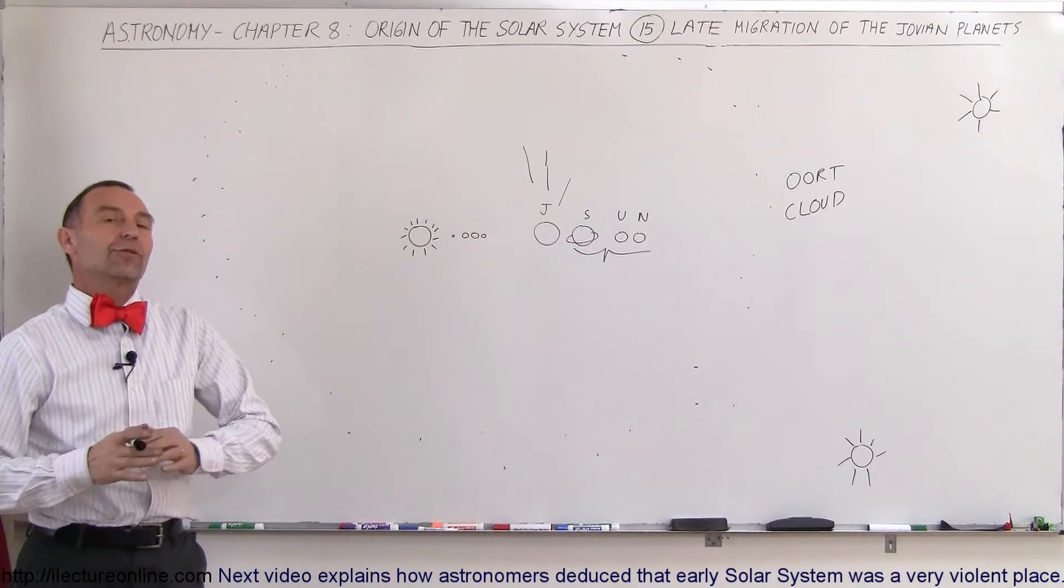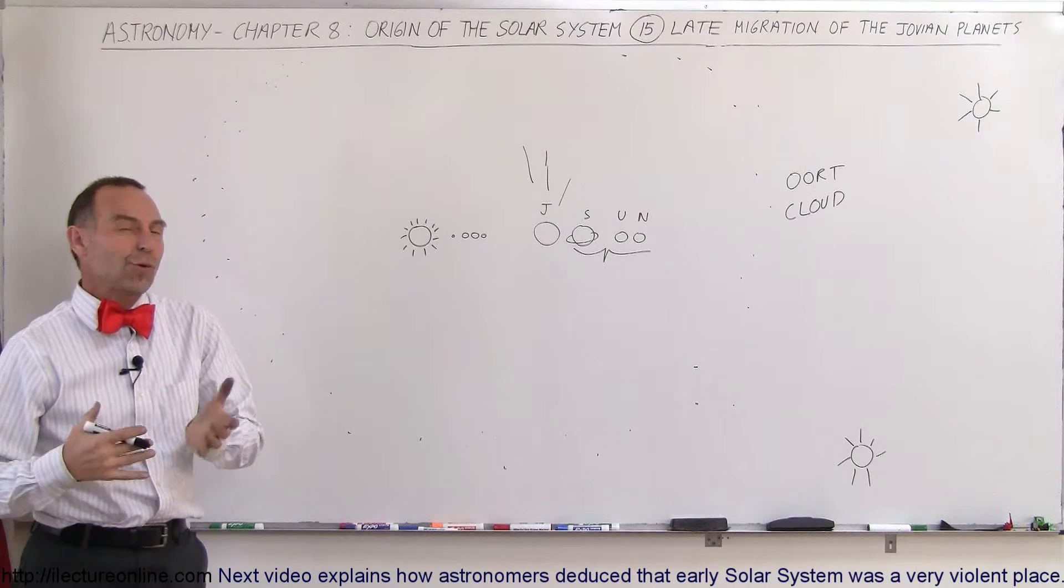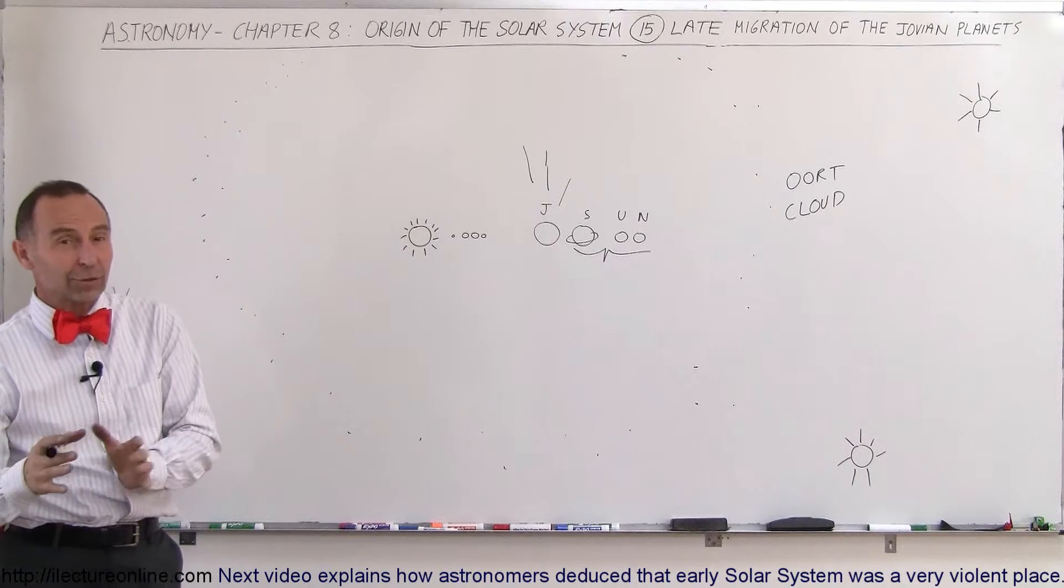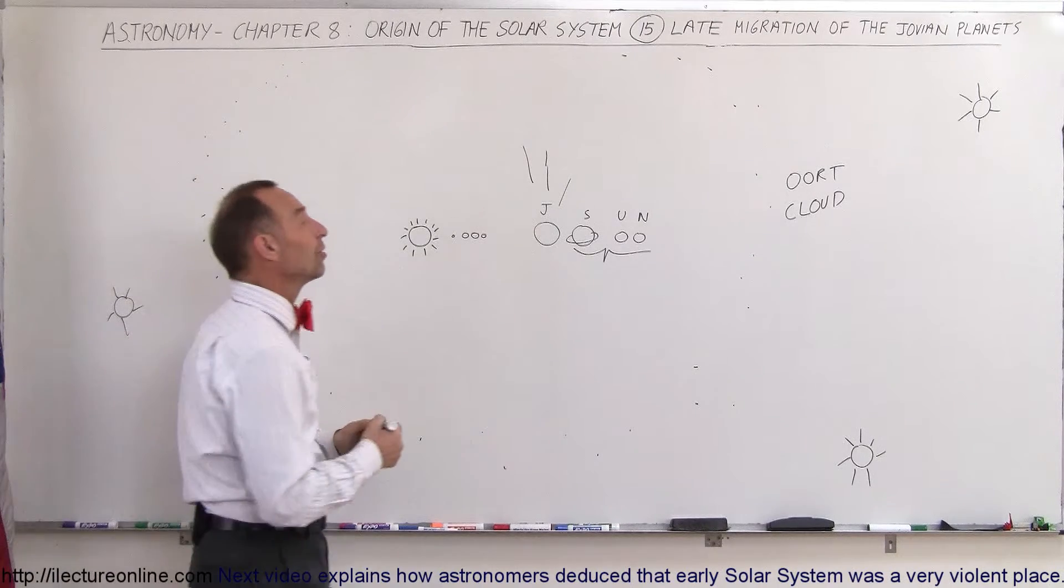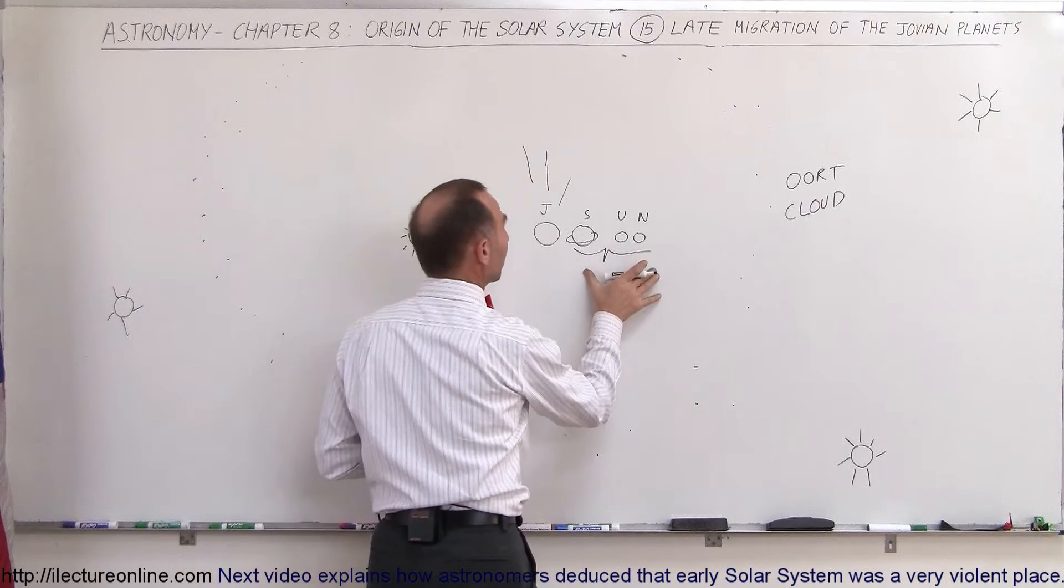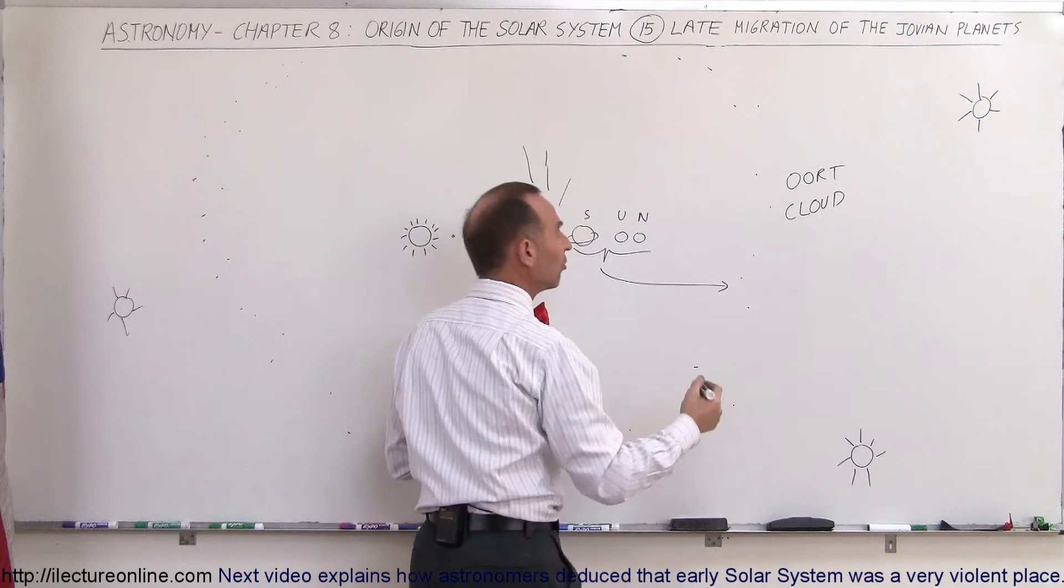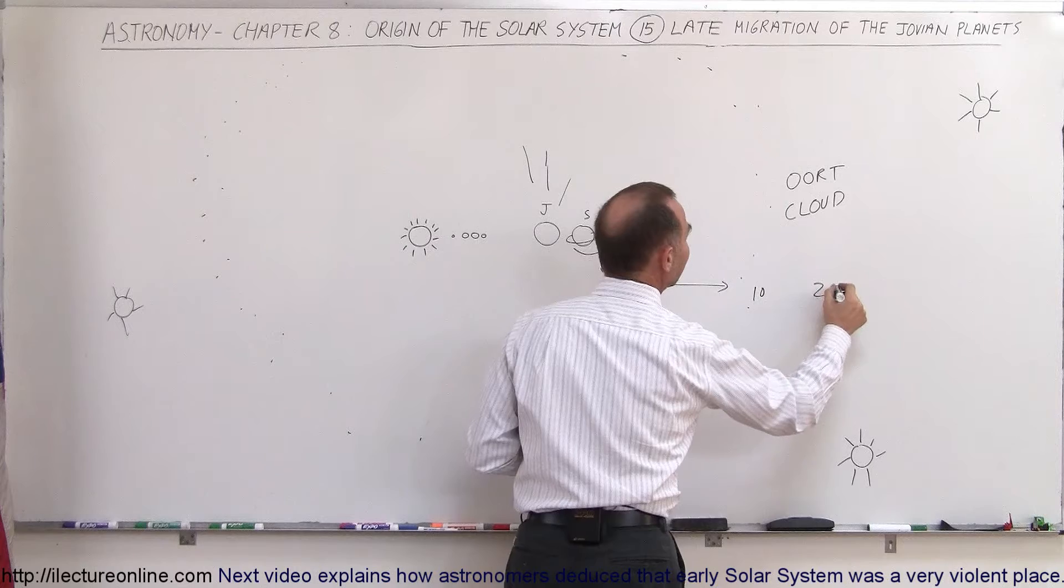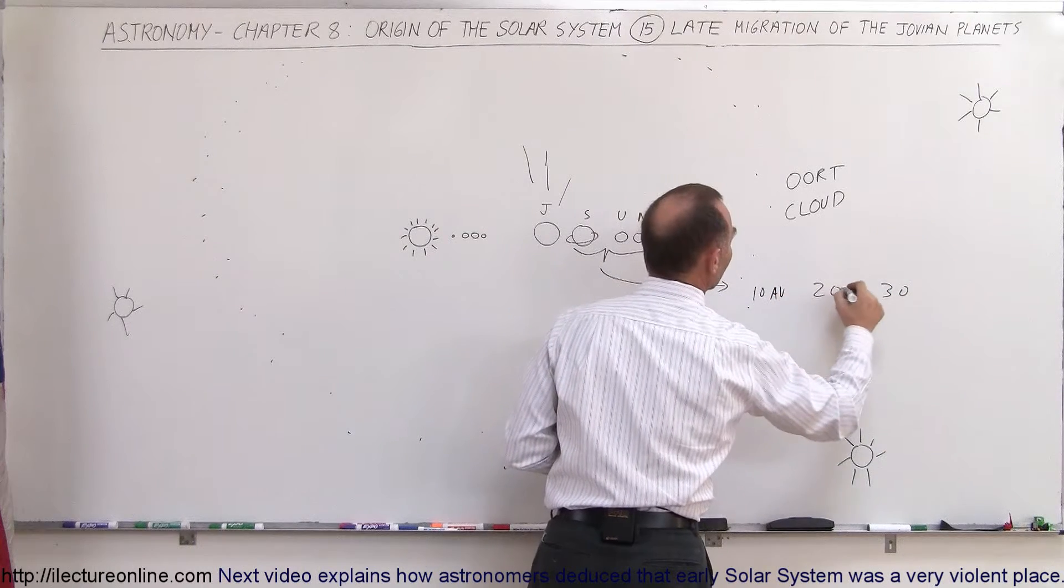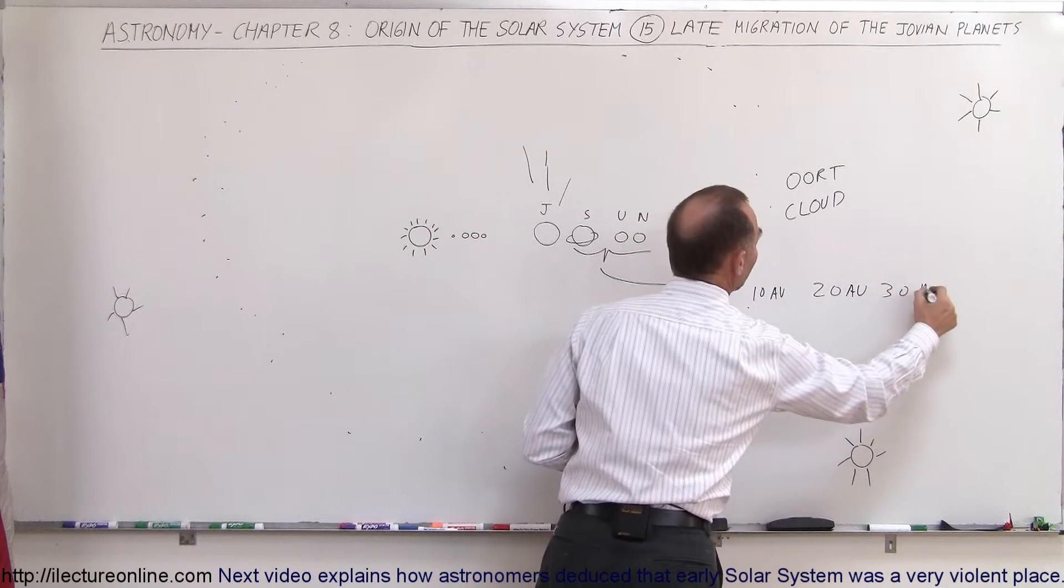Welcome to ElectronLine and here are some additional mysteries as to how the solar system got to look the way it does today. One of those mysteries is why the three big gas planets, Saturn, Uranus and Neptune, ended up so far away at distances of 10, 20 and 30 astronomical units for Saturn, Uranus and Neptune.